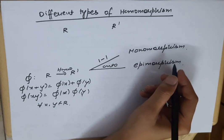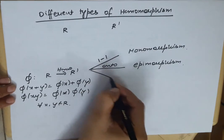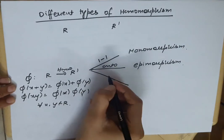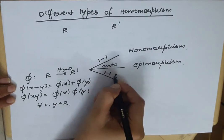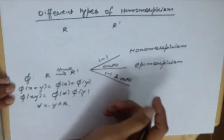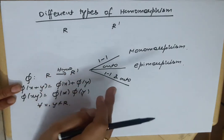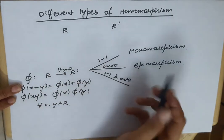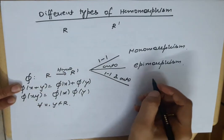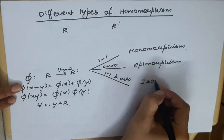These are two different types of morphisms. Third, if there is a mapping that is 1-1 and onto, and with that it is a homomorphism, then in this case we call it isomorphism.